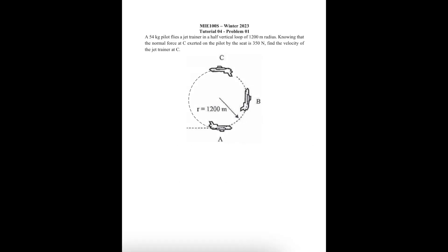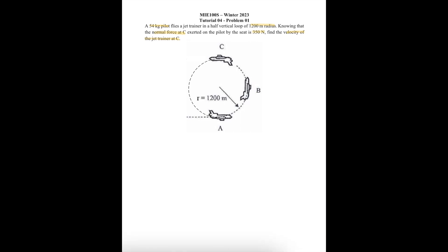Starting with our first problem, we've got a 54 kg pilot flying a jet trainer in a half vertical loop of 1,200 meters radius. Knowing that the normal force at C exerted on the pilot by the seat is 350 newtons, find the velocity of the jet trainer at C. This is a fairly simple question. As usual, we're going to start with our free body diagram, but first we're going to write down the values that we know.